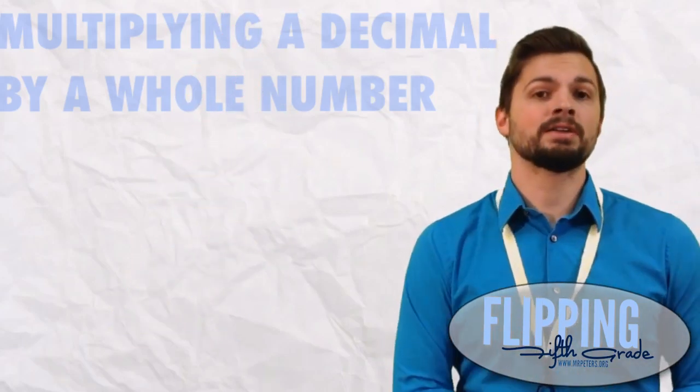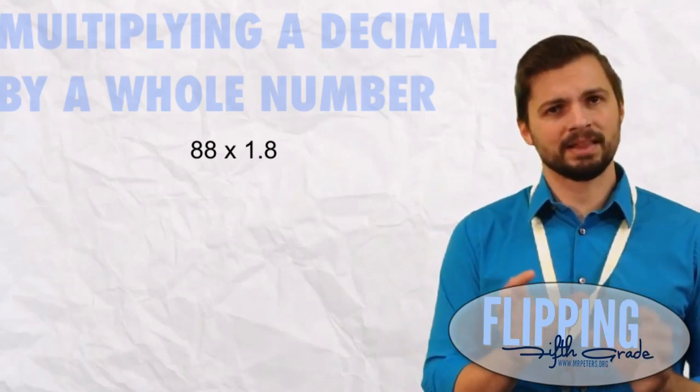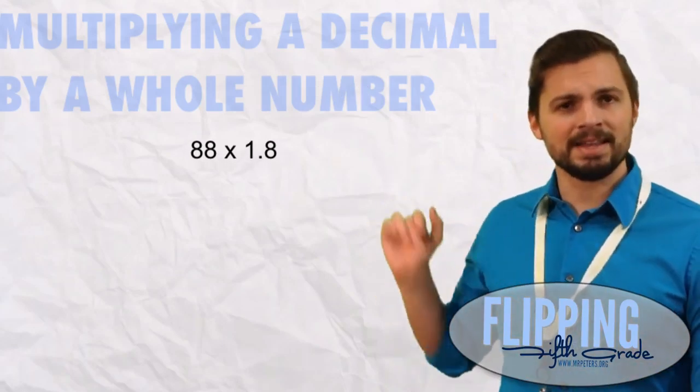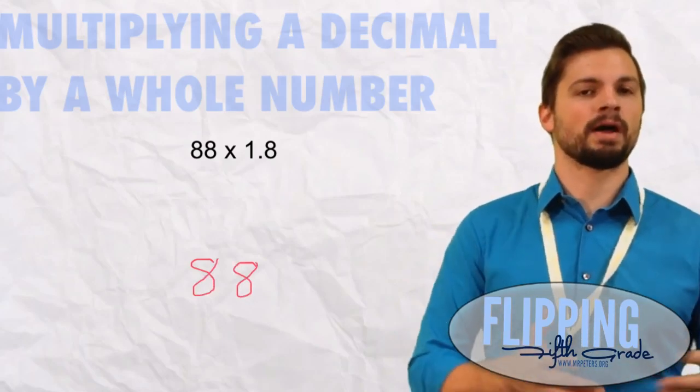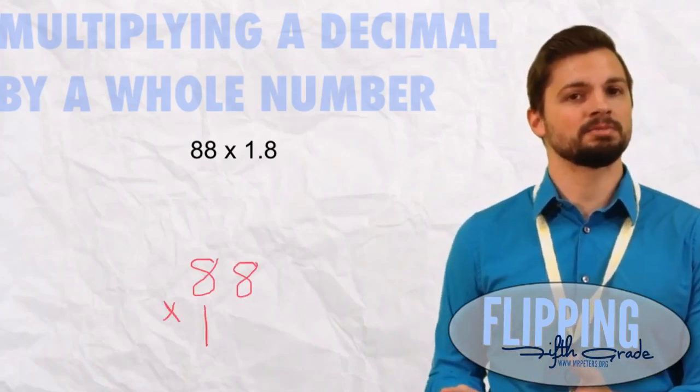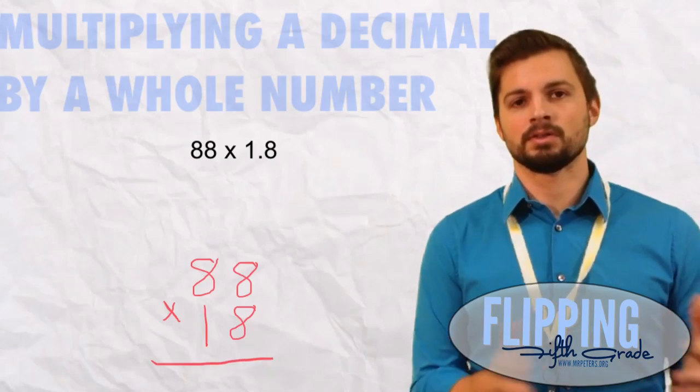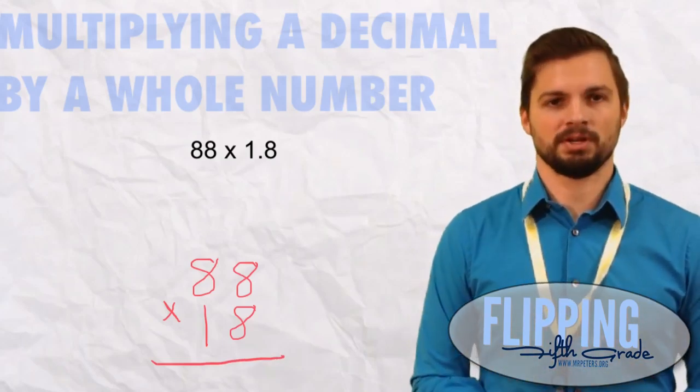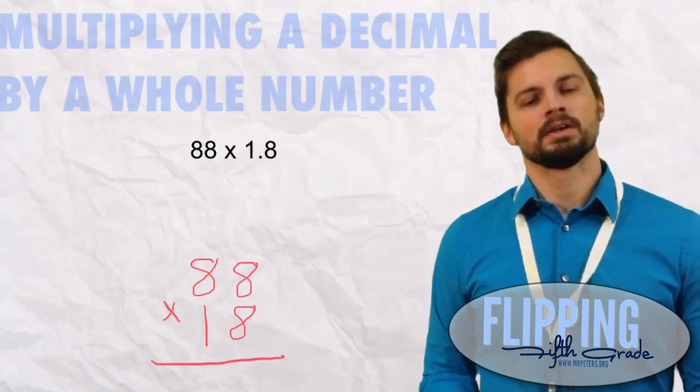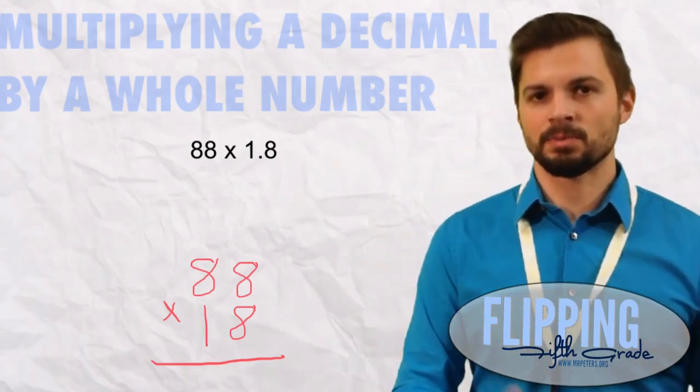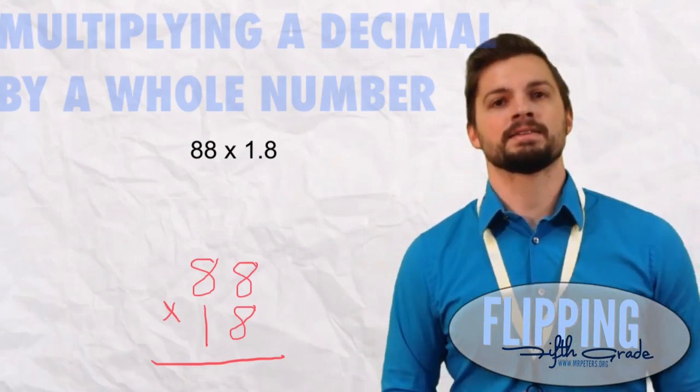For our third and final example we're going to look at something that looks a little bit different. 88 times 1.8. Now right away you may say, why aren't we lining up our decimals or lining up the place values? You don't need to here because we're going to treat it like 88 times 18. So again, forget about the decimal. It's not there right now. 88 times 18.